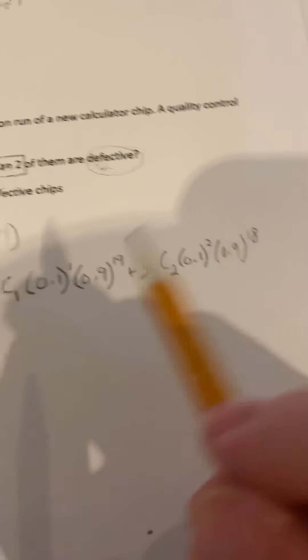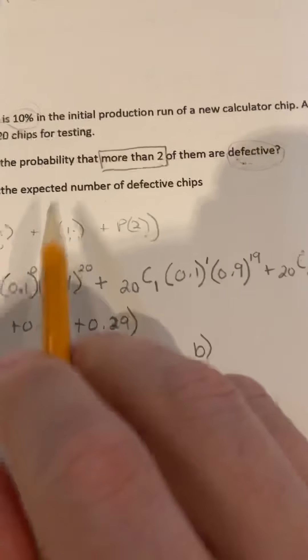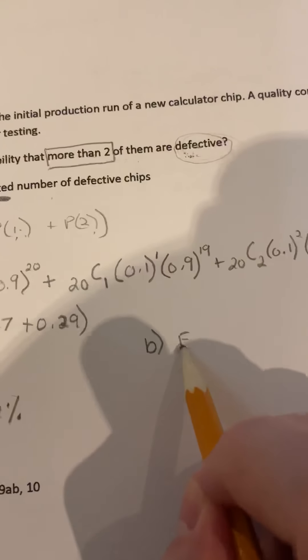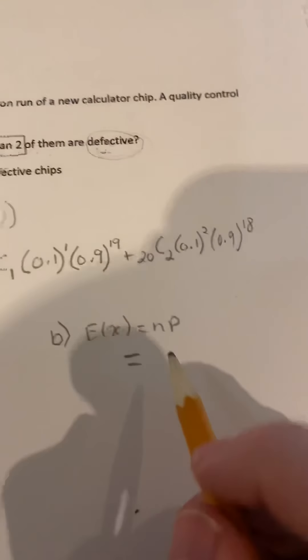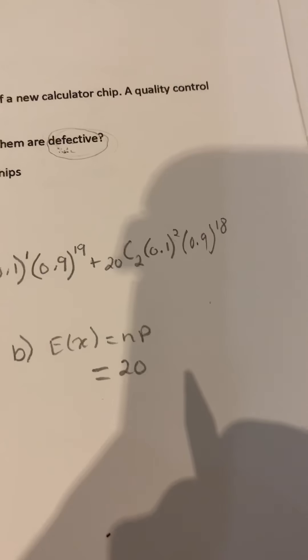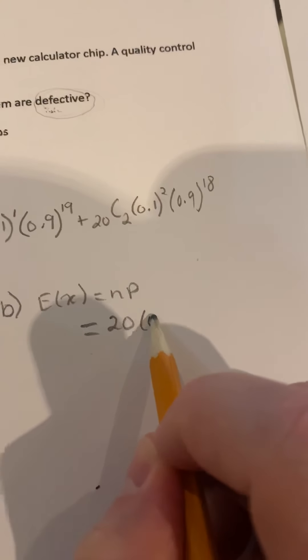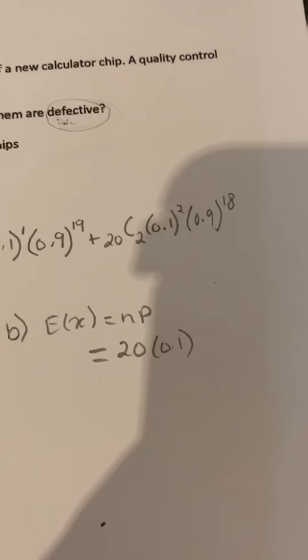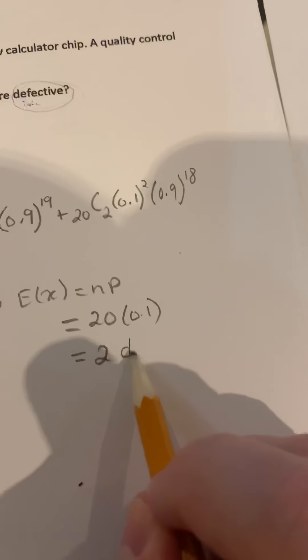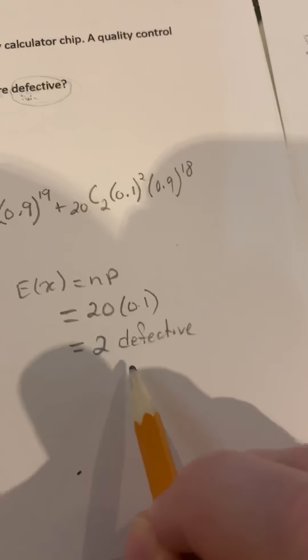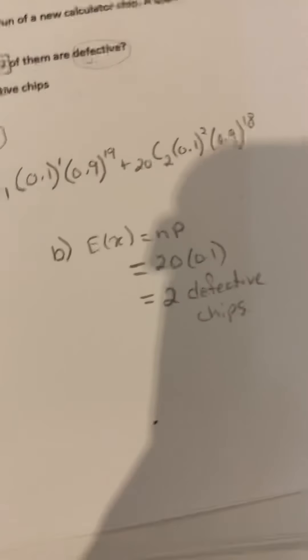Now B, which is what is the expected number? So expected, E of X equals N times P. So how many chips did we choose? We choose 20. And what is the probability of a defective chip? It was 0.1. So how many should we expect? Well, we should expect 10% of 20 chips, which would give you two defective chips. That's what we should expect.